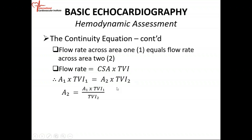The flow across the aortic valve is equal to the aortic valve area times the time velocity integral across the aortic valve. You're going to have to use continuous wave Doppler because the velocity is going to be very large. Once you rearrange the equation, the aortic valve area equals the area of the LVOT times the TVI across the LVOT divided by the TVI across the aortic valve. This is the continuity equation.